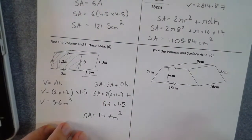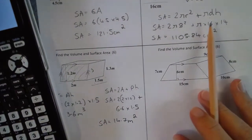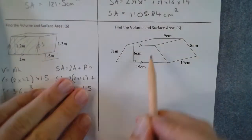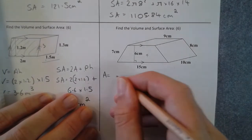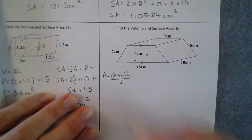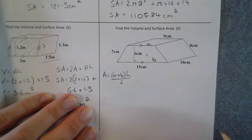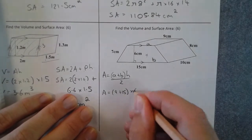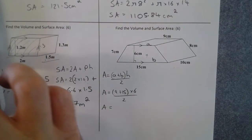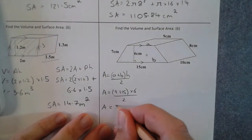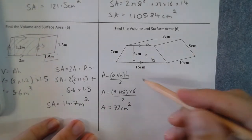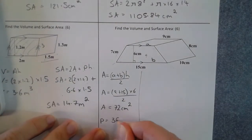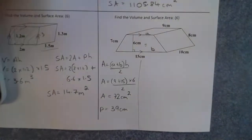The final shape is a trapezium prism. I'll work out the area and perimeter of the trapezium separately first. Area of a trapezium: (a + b) times height divided by 2, where a and b are the parallel sides — so (9 + 15) times 6 divided by 2 equals 72. The perimeter is 15 plus 8 plus 9 plus 7, which is 39 centimeters.